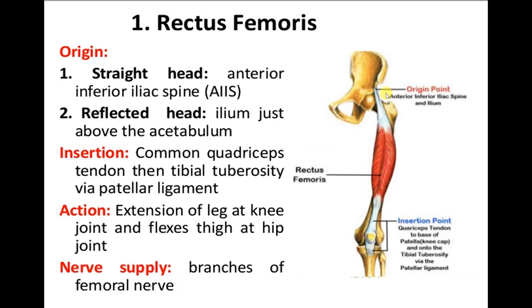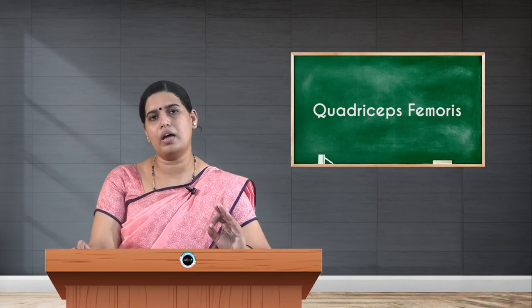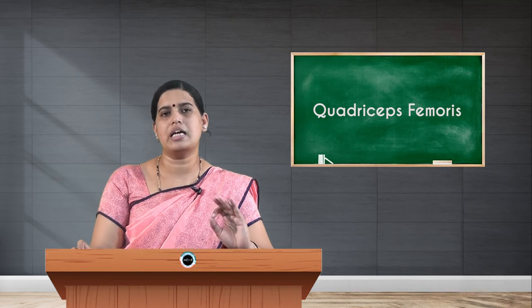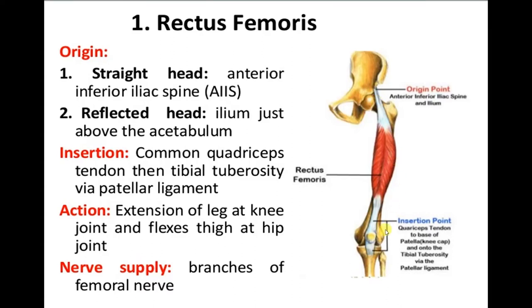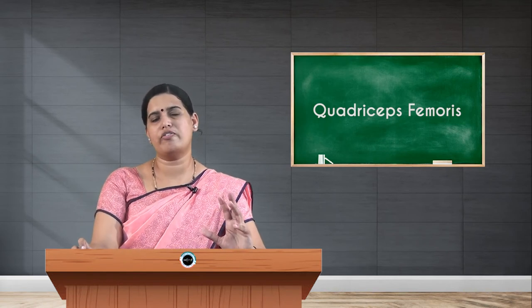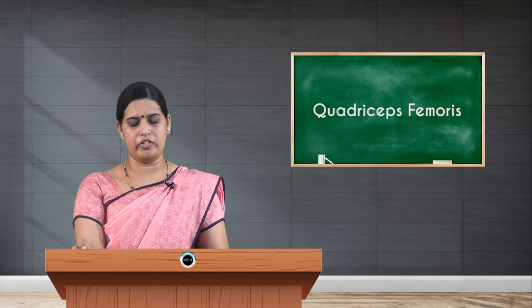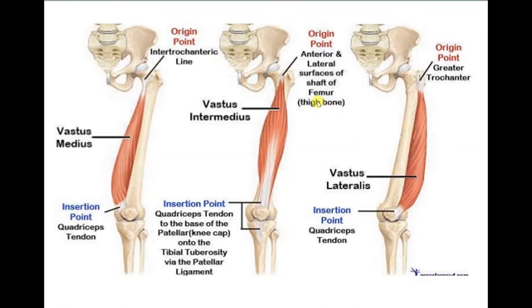Rectus femoris is the only muscle fiber of quadriceps femoris that takes its origin from the hip bone, whereas the rest of the vasti originate from the femur. Regarding its actions, rectus femoris acts at both the hip and the knee: it produces flexion of the hip and extension of the knee. Its nerve supply is from the posterior division of the femoral nerve.